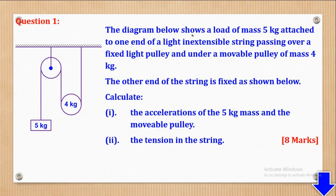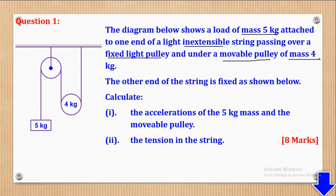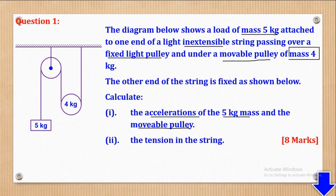Question 1 says that the diagram below shows a load of mass 5kg attached to one end of a light inextensible string passing over a fixed light pulley and under a movable pulley of mass 4kg. The other end of the string is fixed as shown. Calculate: Roman 1, the accelerations of the 5kg mass and the movable pulley, and Roman 2, the tension in the string.